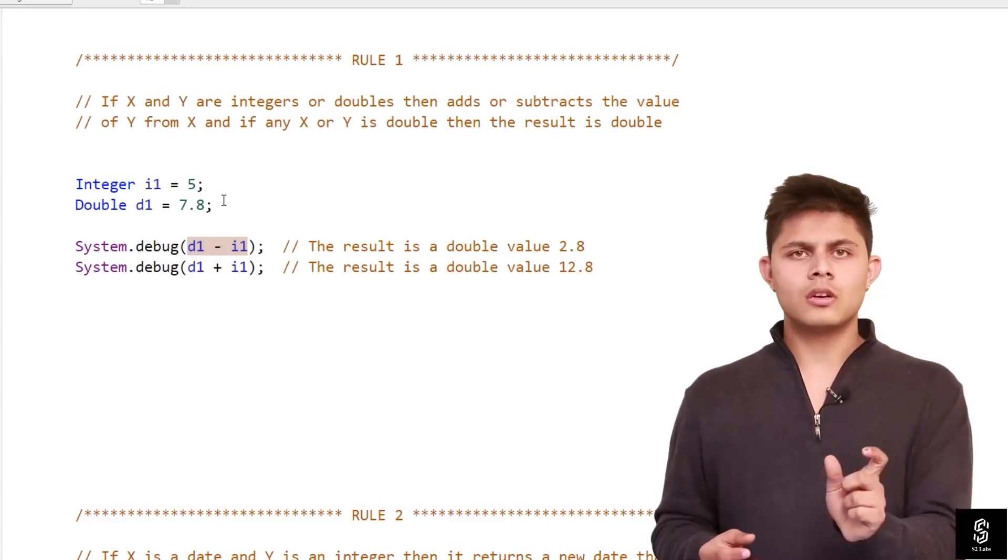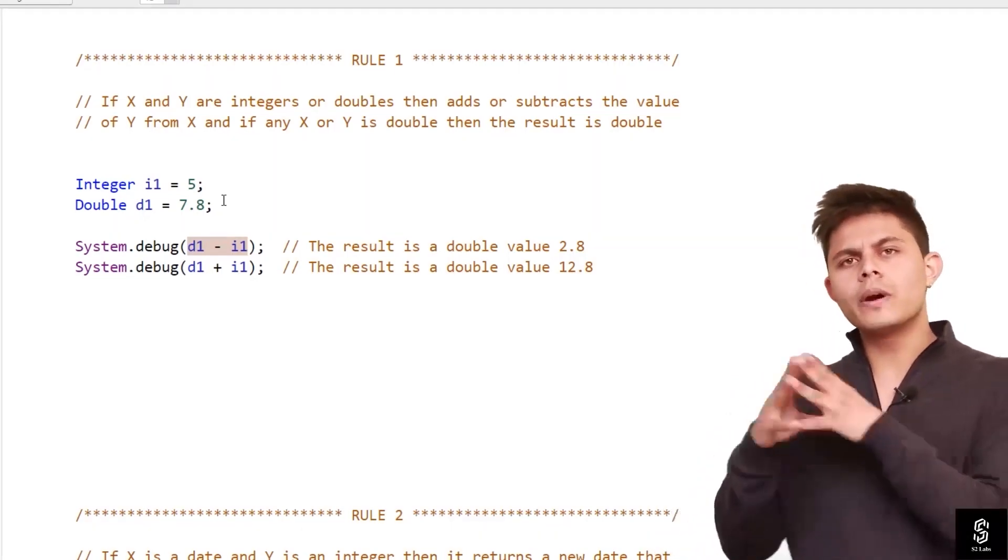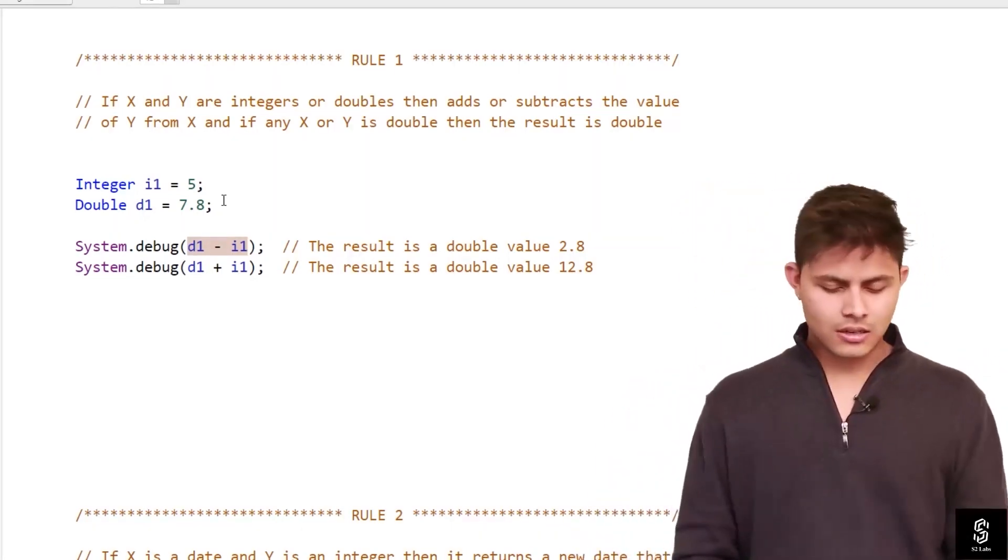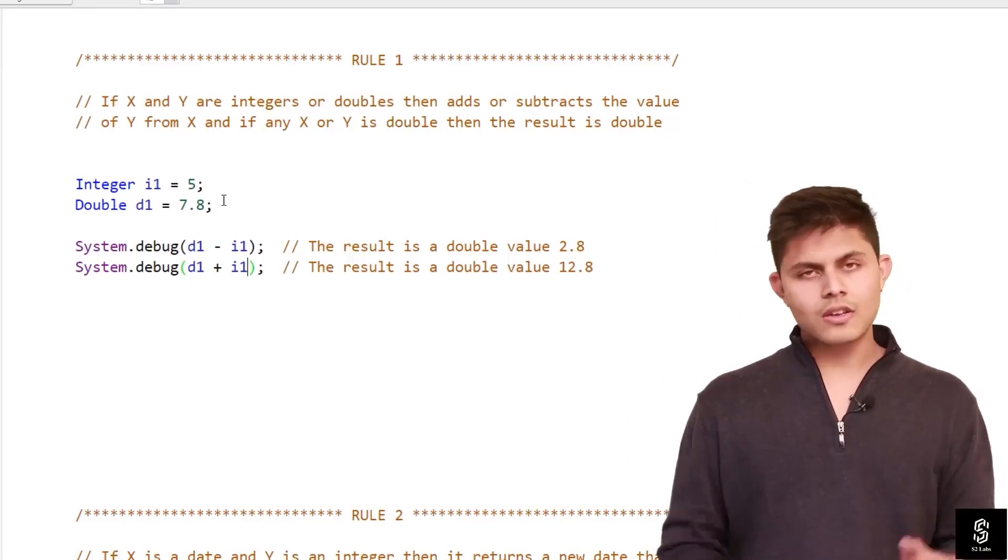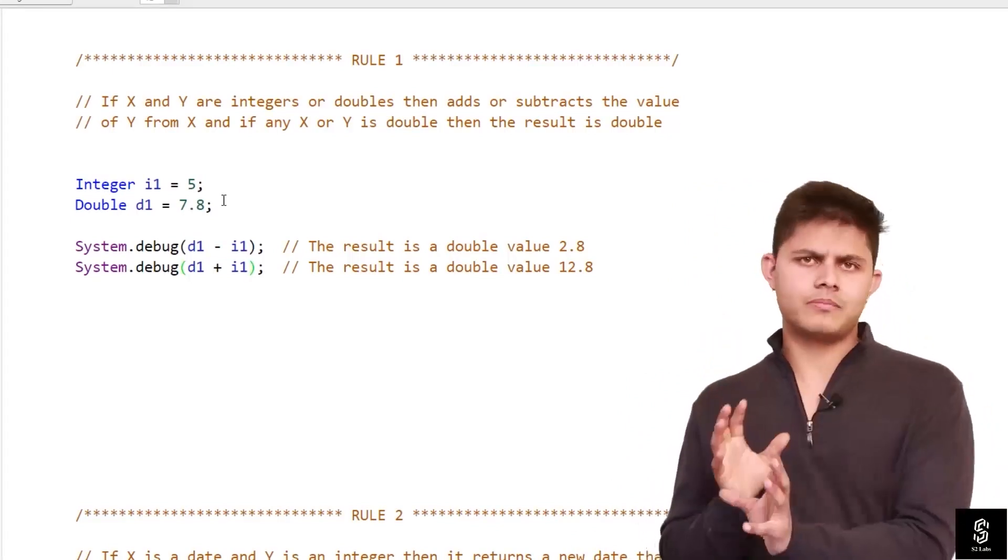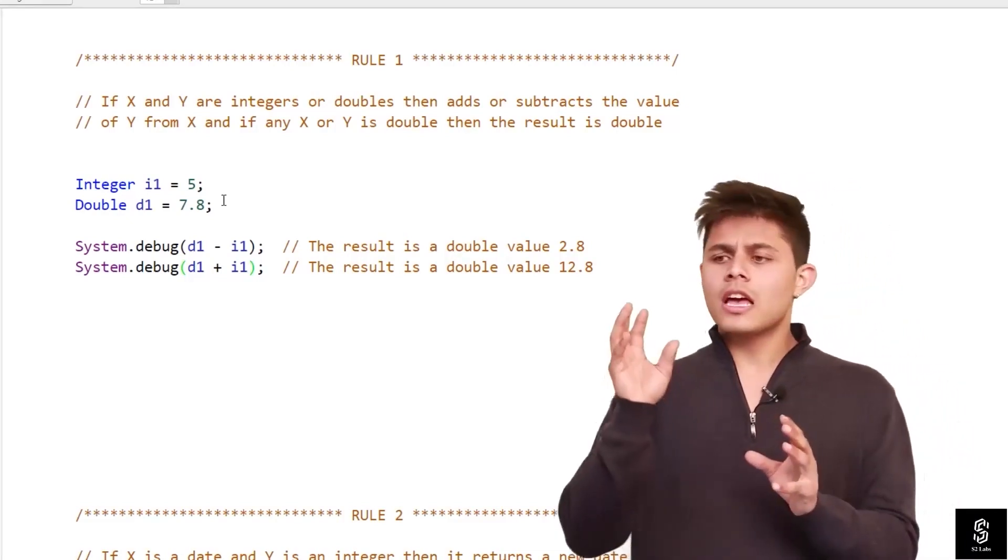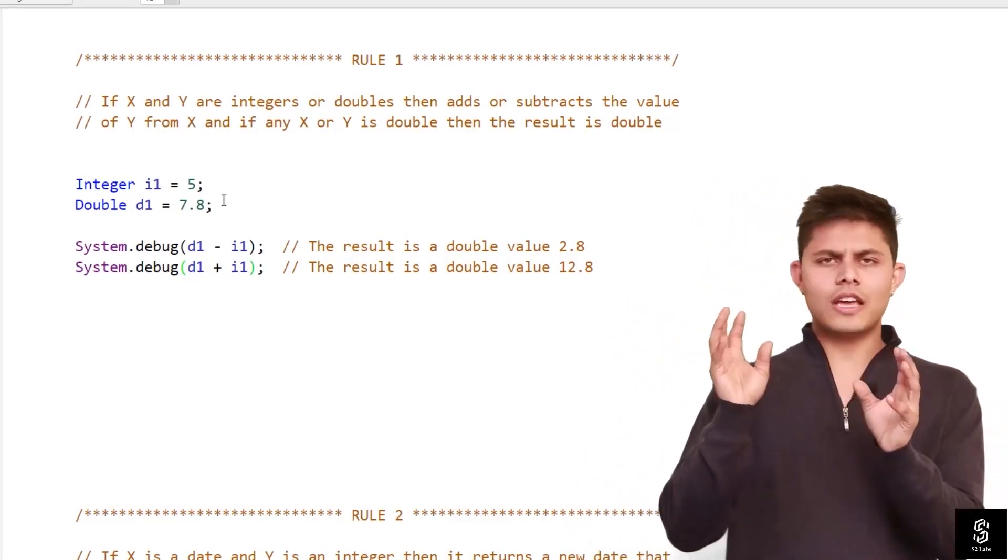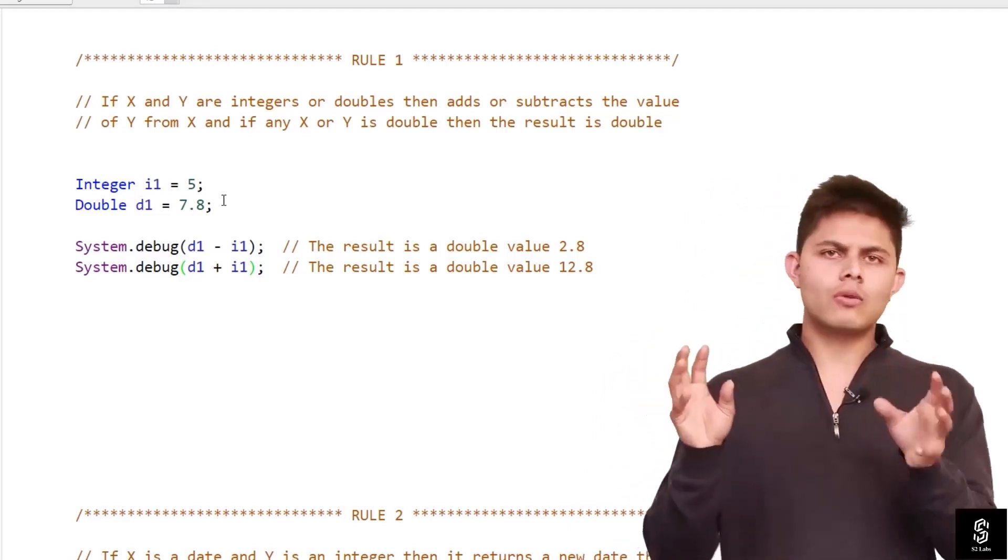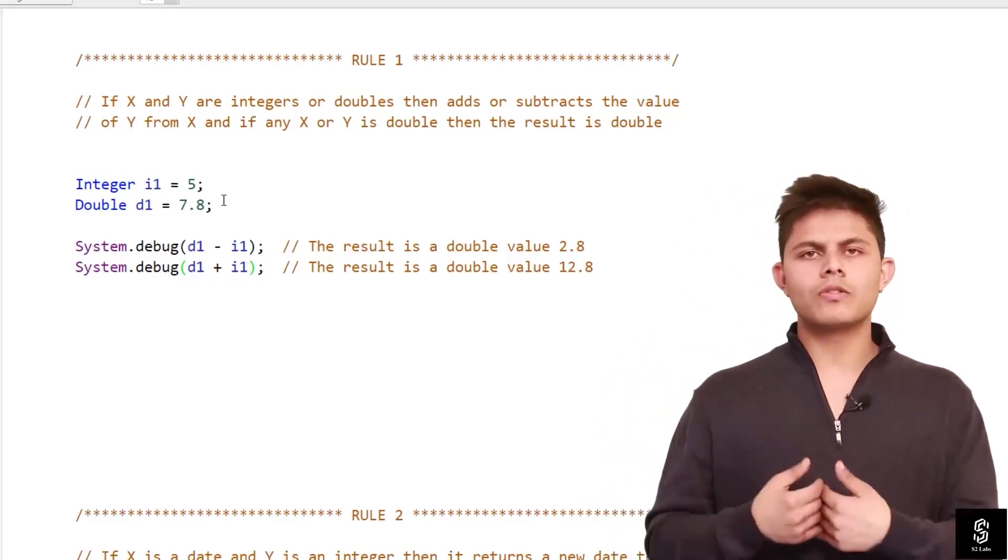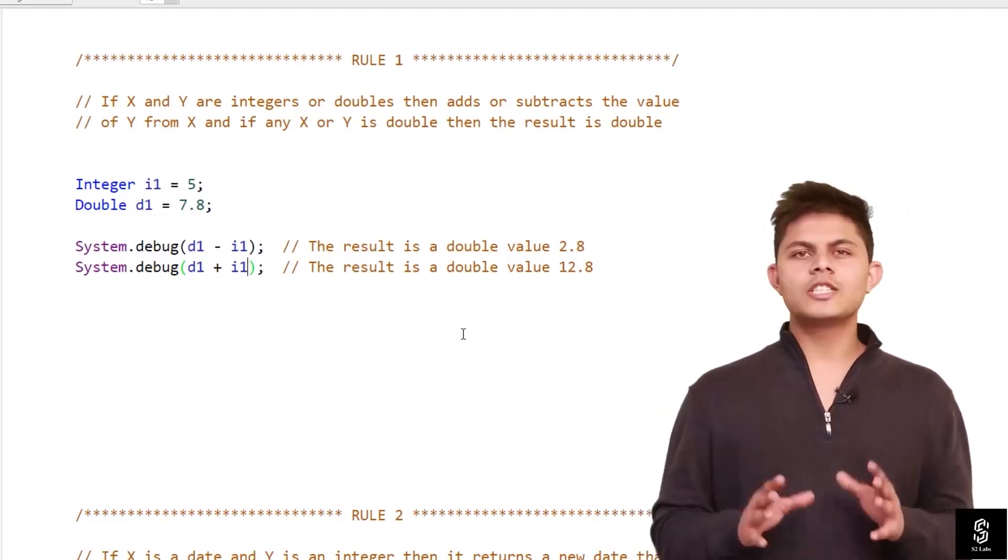But here it will return 2.8, which means it's returning a double value. So whenever with add and subtract operator, if any of the operand x or y is a double, then the output will be double. That's it. Let's begin with rule 2.